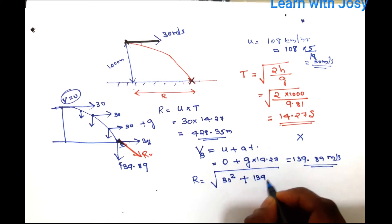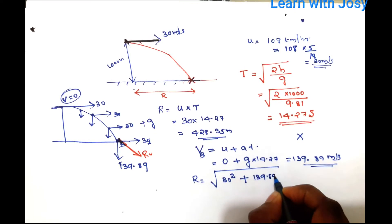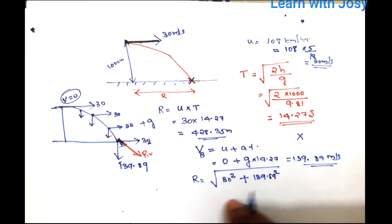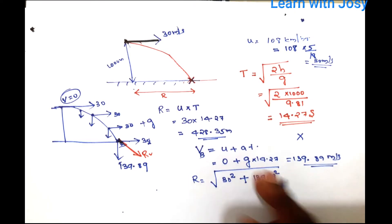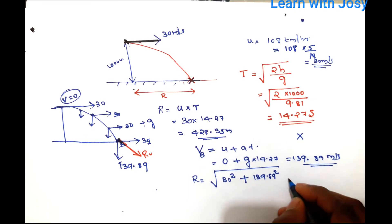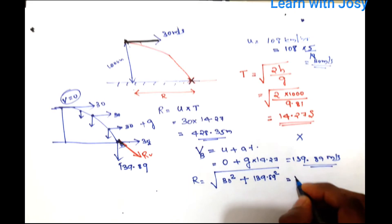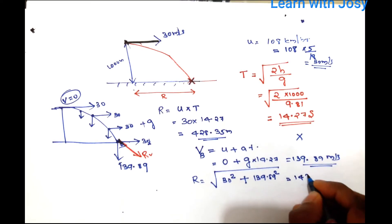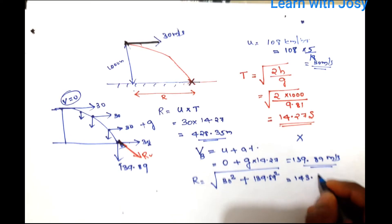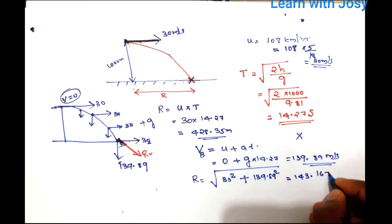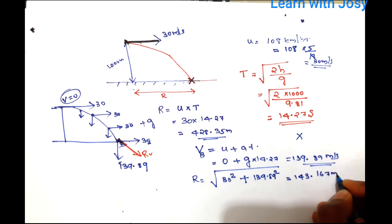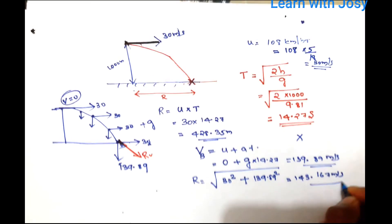The resultant velocity is √(30² + 139.89²) ≈ 143.07 meters per second.